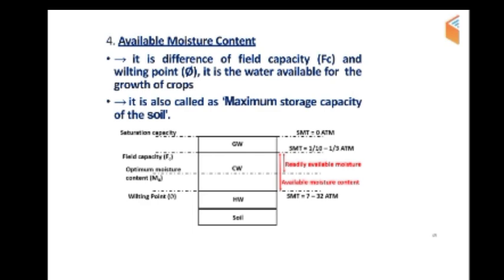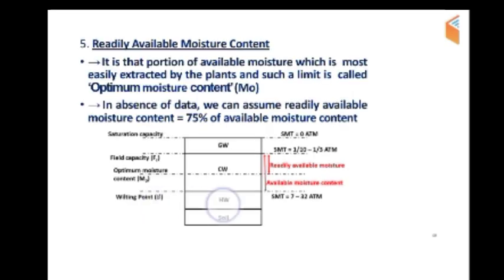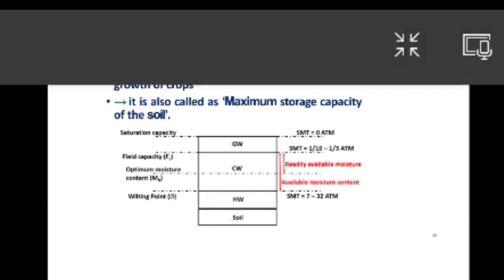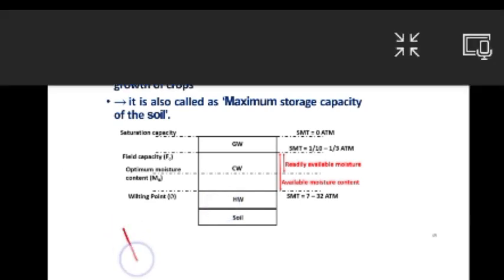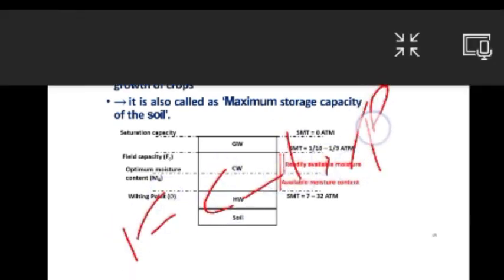The field capacity with the wilting point difference means EFC minus WP. The field capacity is the lower limit of ground water and upper limit of capillary water. The wilting point is the lower limit of capillary water and upper limit of hygroscopic water.